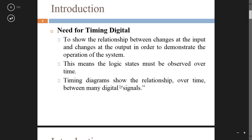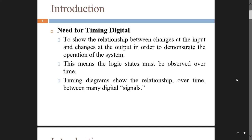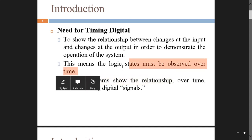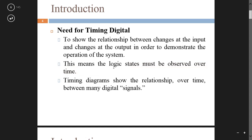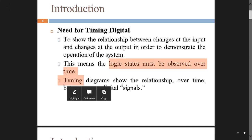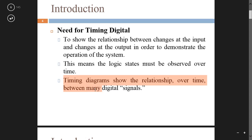Why do we need to time digital signals? To show the relationship between the changes at the input and the changes at the output, and to demonstrate the operation of a system. A system receives input, processes it, and gives output — this takes time. To represent when the input is applied and when the output is obtained, we use timing diagrams. Timing diagrams show the relationship over time between many digital signals.